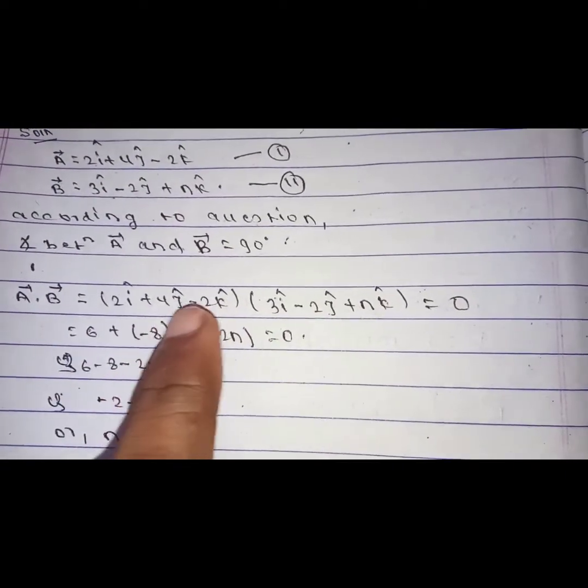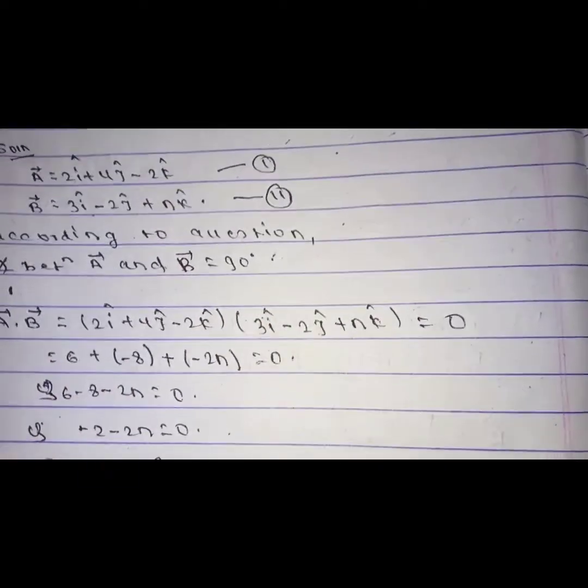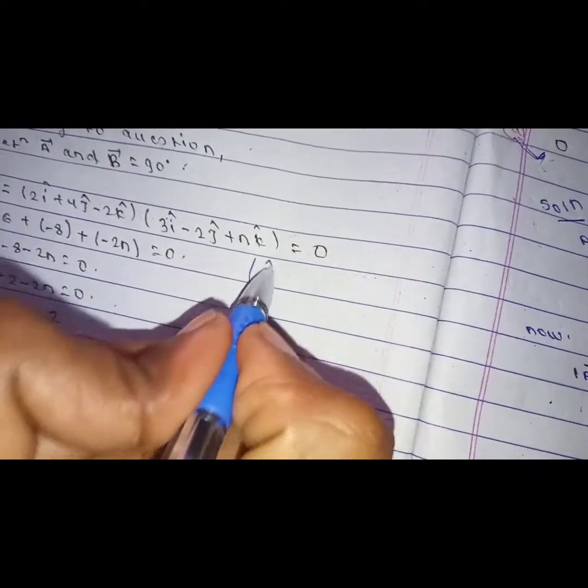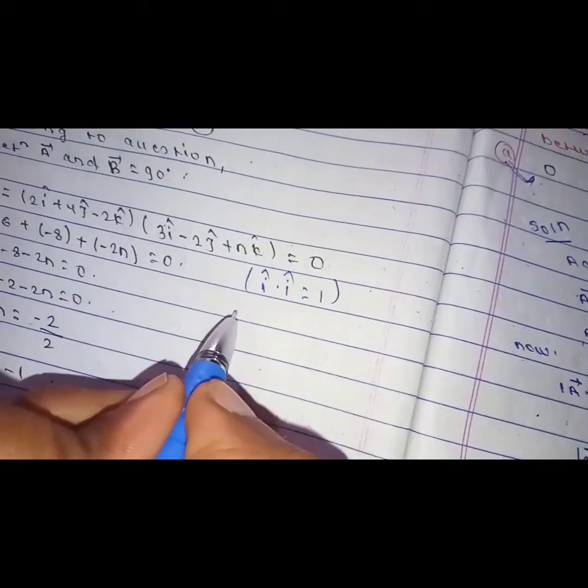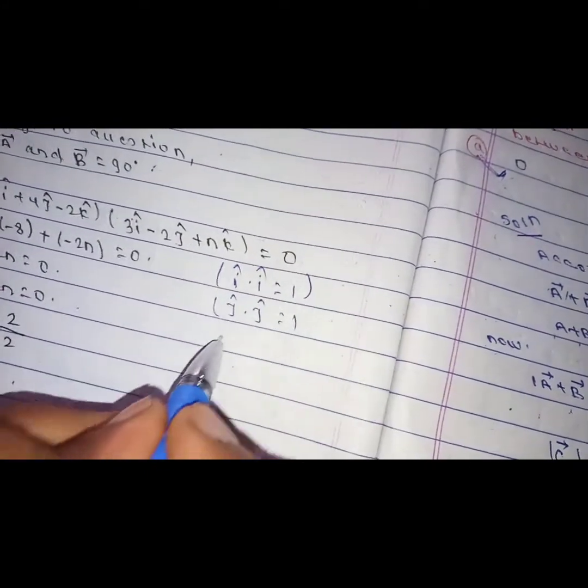The dot product, i dot i equals to 1. For a future vector, i dot i equals to 1. j dot j equals to 1.